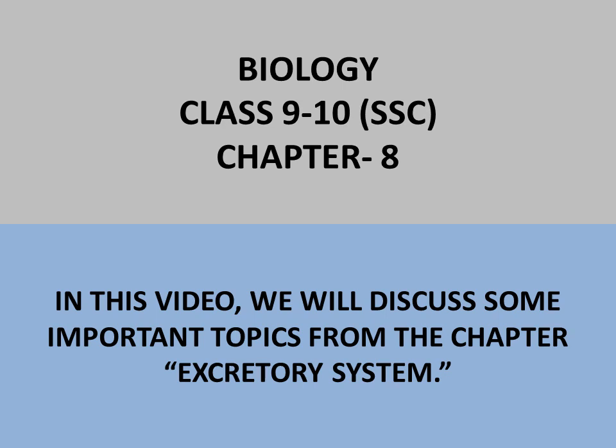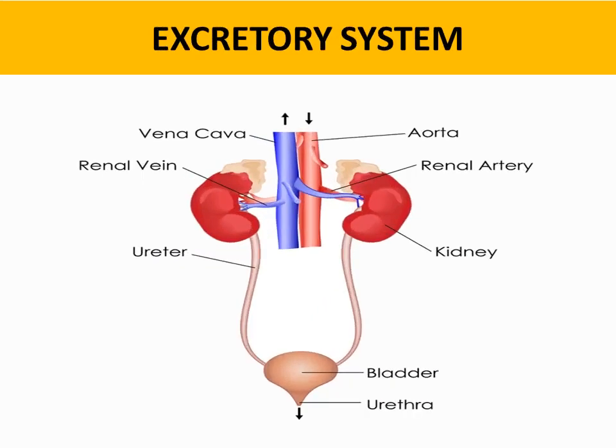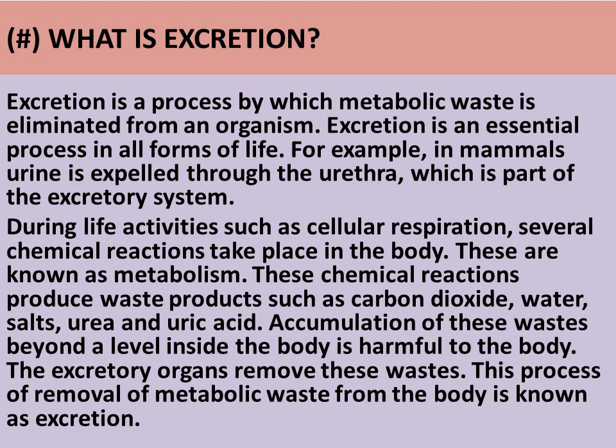Welcome to School 2020. In this video we will discuss some important topics from the chapter on the excretory system. Excretion is a process by which metabolic waste is eliminated from an organism. Excretion is an essential process in all forms of life. For example, in mammals, urine is expelled through the urethra, which is a part of the excretory system.